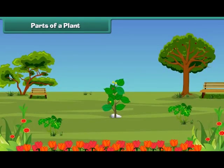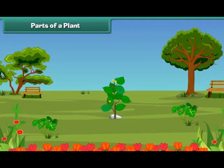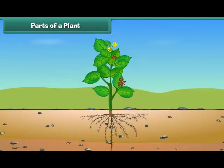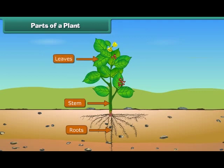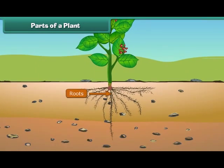Friends, let us discuss various parts of a plant. The main parts of a plant are roots, stem, leaves, flowers and fruits. Roots are the lower part of a plant. They grow in soil and help the plants to get water and minerals from the soil.